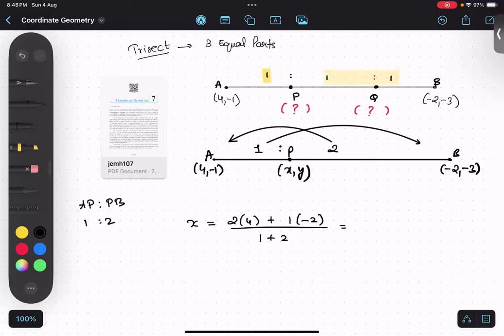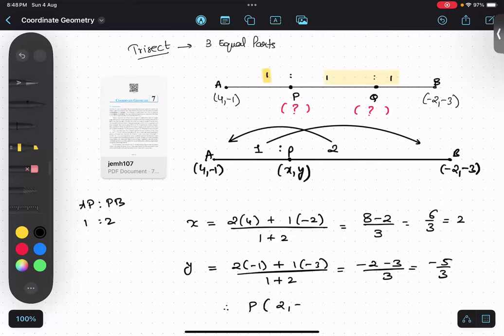Similarly for y, let's do it quickly. Two will get multiplied by minus one, and one will get multiplied by minus three. So answer is minus two minus three upon three, minus five upon three. Therefore my P coordinate is two comma minus five upon three.